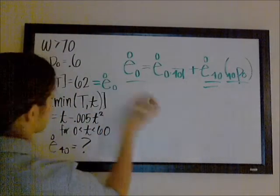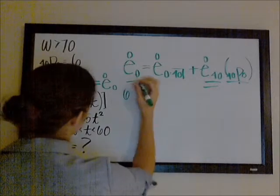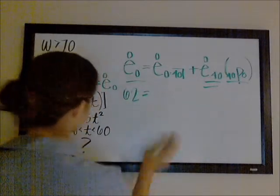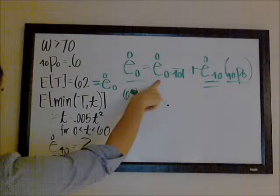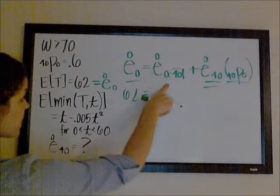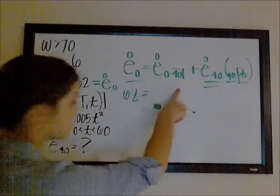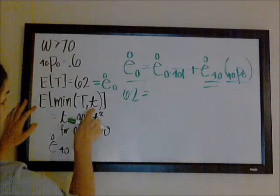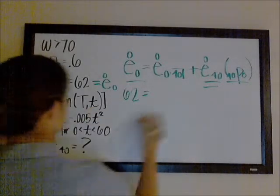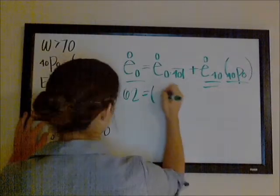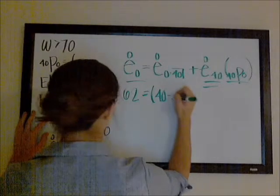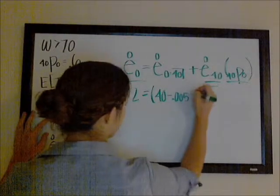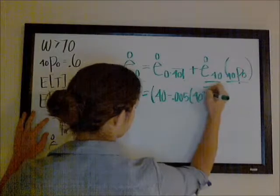So, the complete expectation of life, we're told, is 62. The complete expectation of life for 0 bounded by 40, well, we're just putting 40 in for T here. So, that's going to be 40 minus 0.005 times 40 squared.